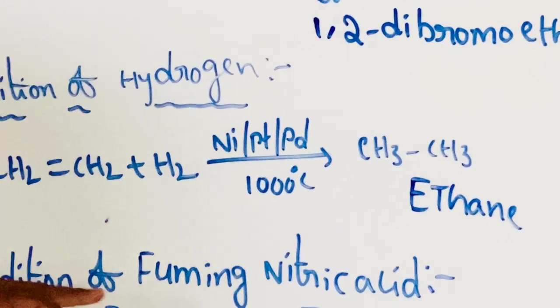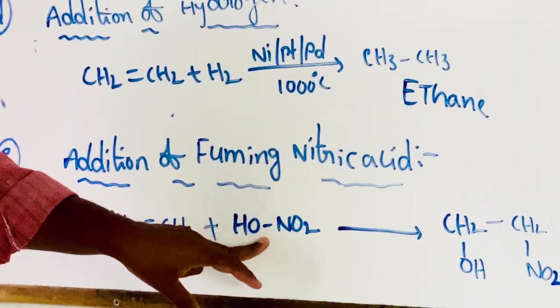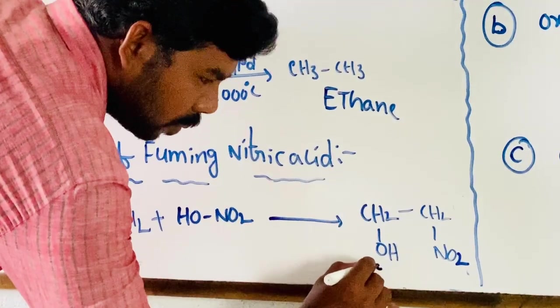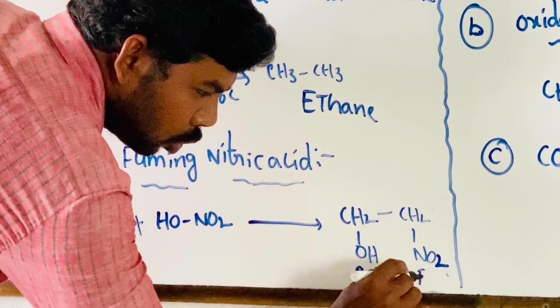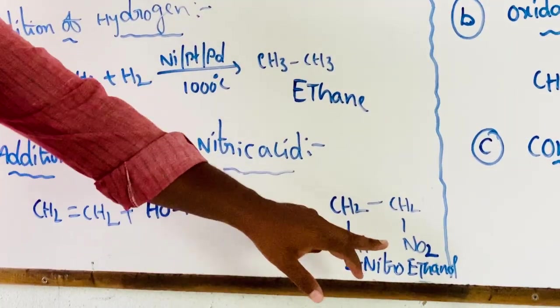Next, addition of fuming nitric acid. Ethene reacts with nitric acid vapors to give 2-nitroethanol.